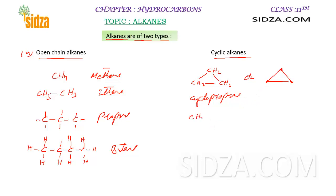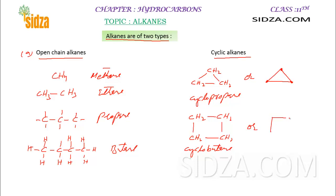Similarly, you can have cyclobutane with four carbon atoms forming a cyclic molecule. We can also represent it like a square, where each corner represents one carbon atom. This is cyclobutane.